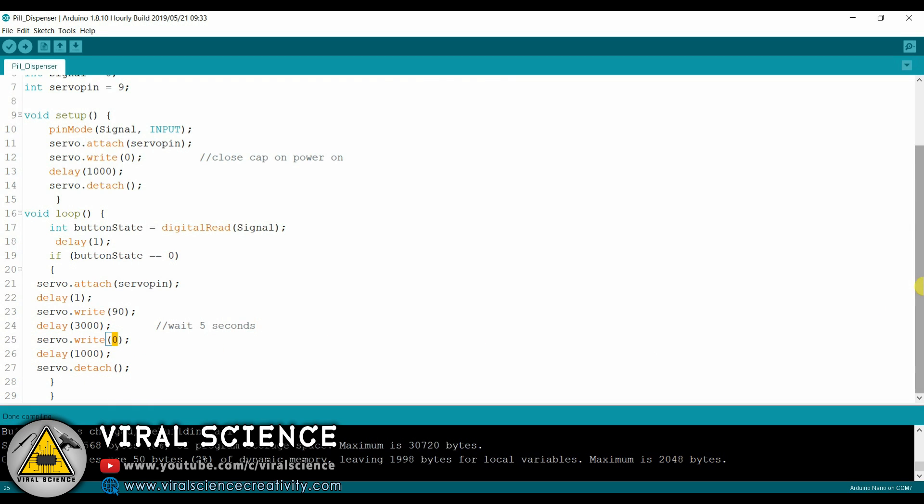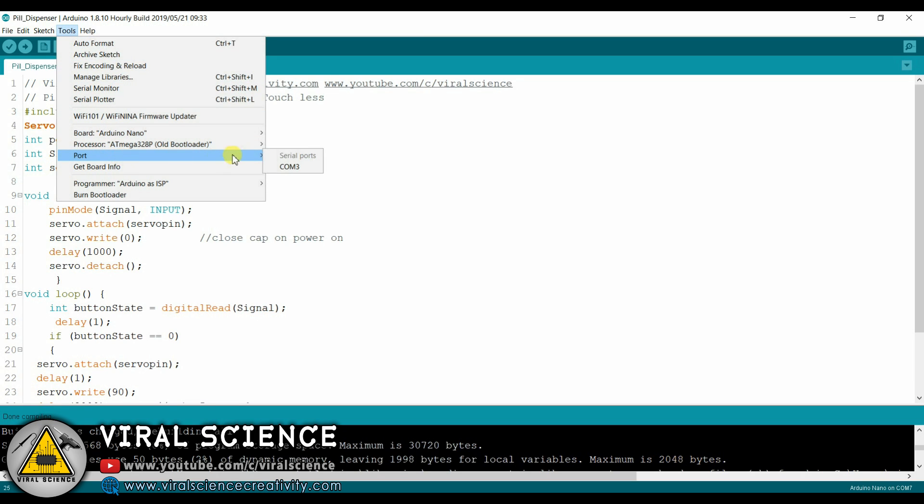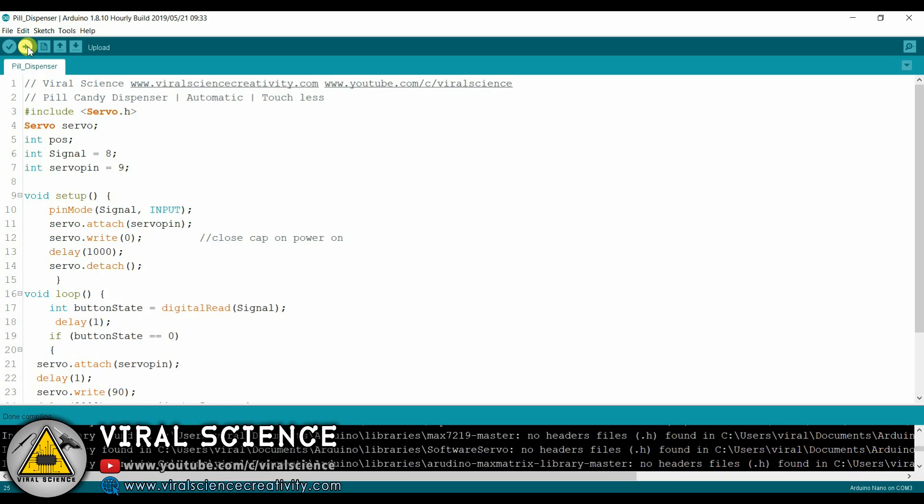And then again comes back to its initial position, that is 0 degree. So this is the simple code. So let's select the board, that is Arduino Nano, we will select the processor, that is ATmega 328P old bootloader, and then we will select the port and we will upload the code.